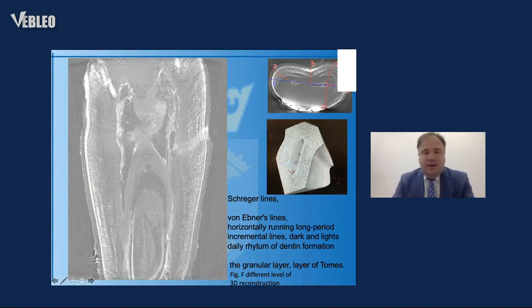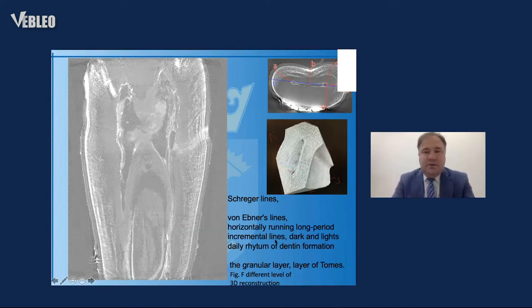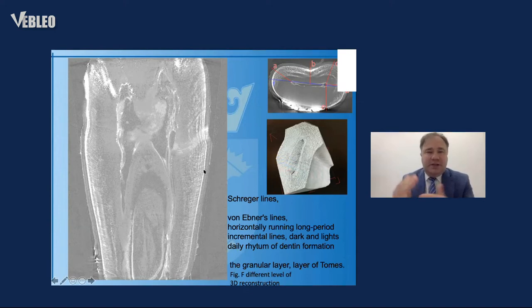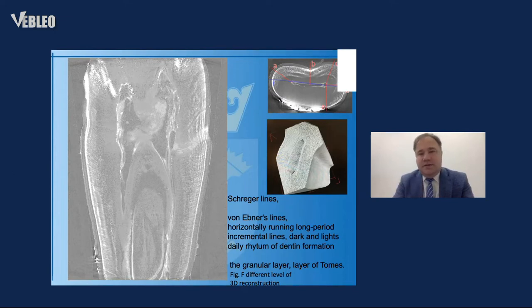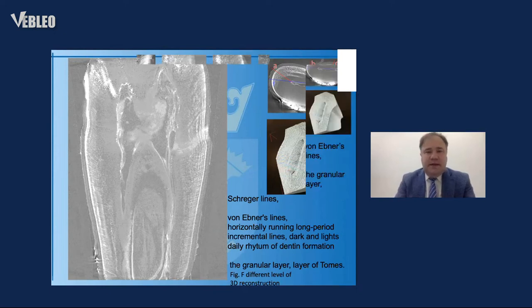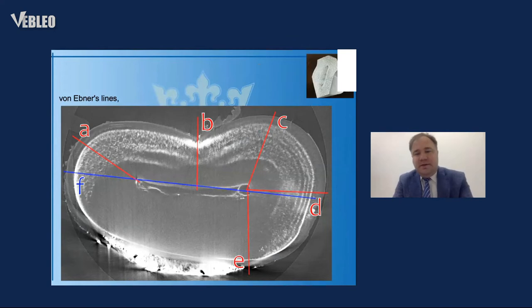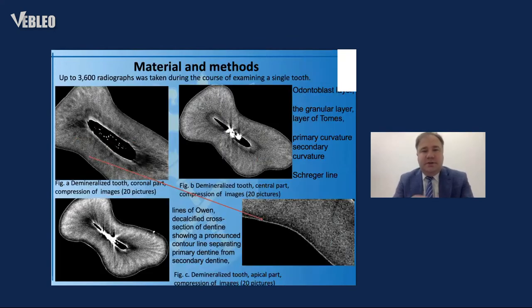When we see structures in our computer finite element model that are very similar — exactly the same and in more detail — to the histological model, including the connections between structures, it means the model we are building is very realistic and without many mistakes.